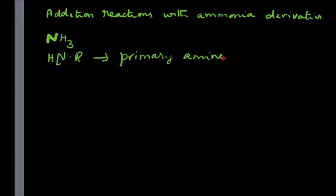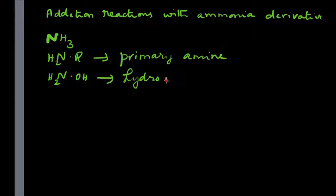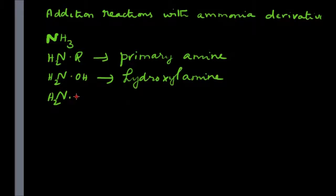When you replace one of the hydrogens of ammonia by an OH (hydroxy) group, the compound that you get is called hydroxylamine. Then the next one is what you get by replacing one of the hydrogens by an NH2 group — this is hydrazine.